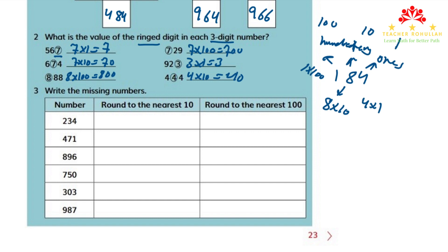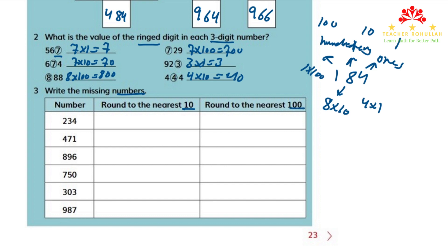We are done with question number 2. Let's now move to question number 3. In question number 3, we are asked to write the missing numbers. The numbers are given in the first column. In the second column we round to the nearest 10, and in the third column we round to the nearest 100. To round to the nearest 10, we underline the digit in the tens place and circle the digit in the ones place. If the circled digit is 5 or more, we round up; if it's 4 or less, we round down.